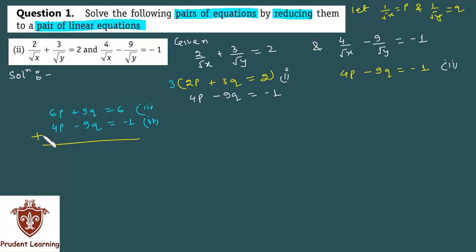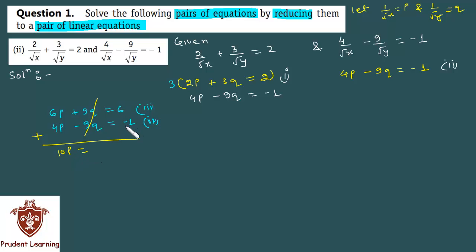Adding the two equations, the q variable cancels out. So 6p plus 4p gives us 10p is equal to 6 plus minus 1, which is 5. Therefore p is equal to 5 upon 10, which gives us p equal to 1 by 2.